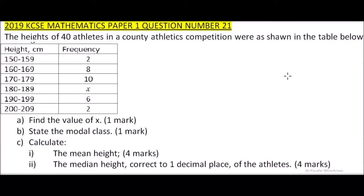This is 2019 question number 21. We are told the height of 40 athletes in a county athletics competition were shown in the table below. We have been given a table. The first column represents the height and this is grouped data you have covered in statistics.